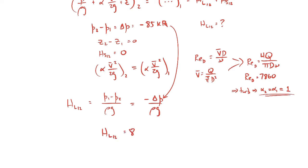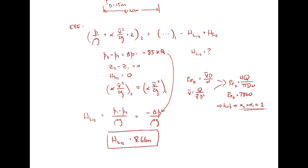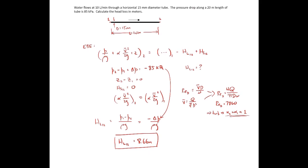There you go. This problem - the key thing is really recognizing that it's an extended Bernoulli equation problem. You identify two points one and two at the inlet and the outlet, and then solve for the head loss. That's all there is to it.